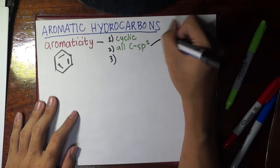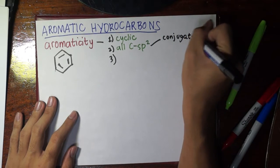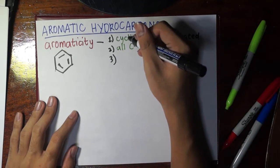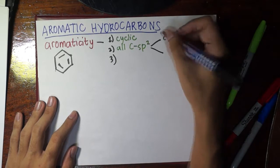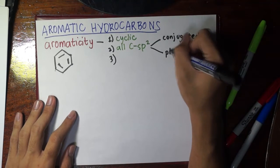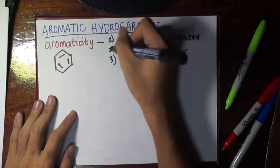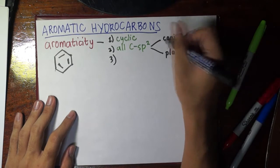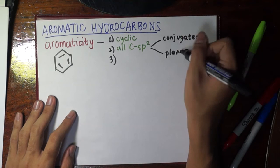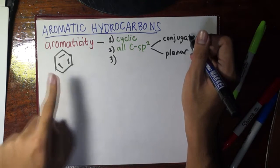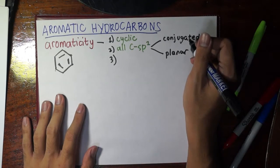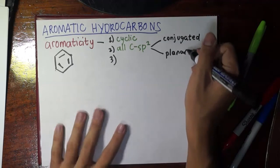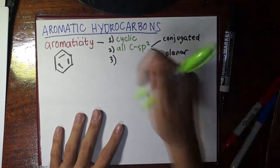That arrangement is called a conjugated system of double bonds. And since all carbons in the ring are sp2, the shape we get is planar. So the second requirement implies the compound must have a conjugated system of double bonds and must be planar throughout. The moment there is a carbon in the ring which is not sp2, it will automatically be non-aromatic because it will not be planar throughout.